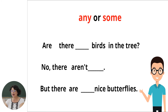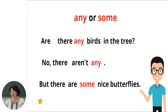One more example. Are there birds in the tree? No, there aren't. But there are nice butterflies. Let's see the right sentences. Are there any birds in the tree? No, there aren't. But there are some nice butterflies.